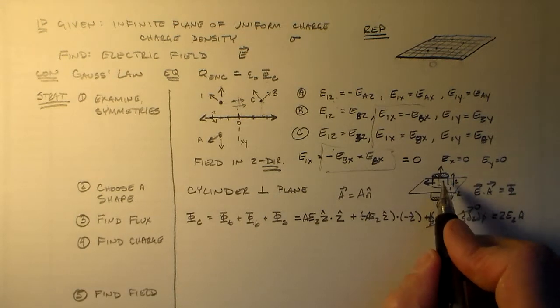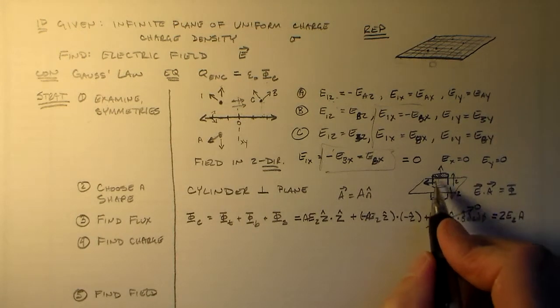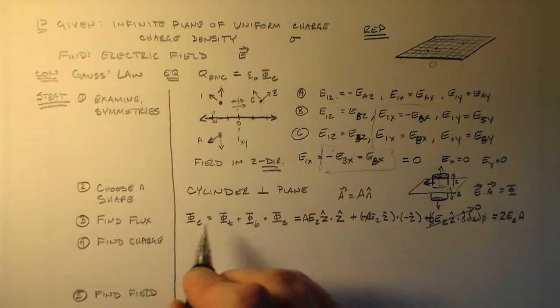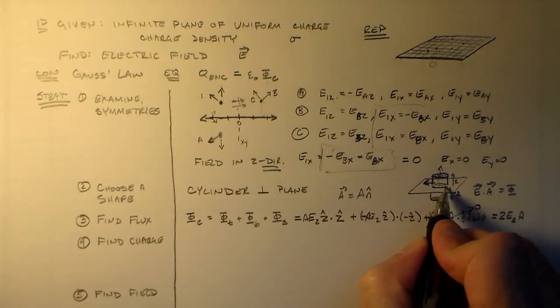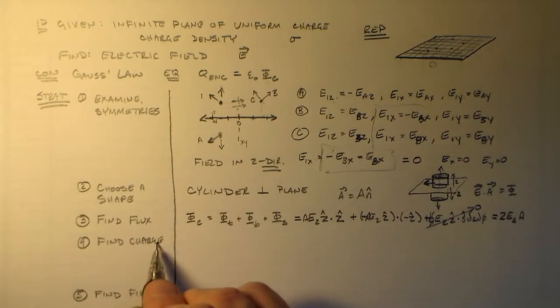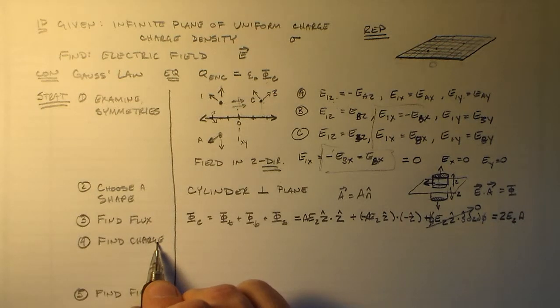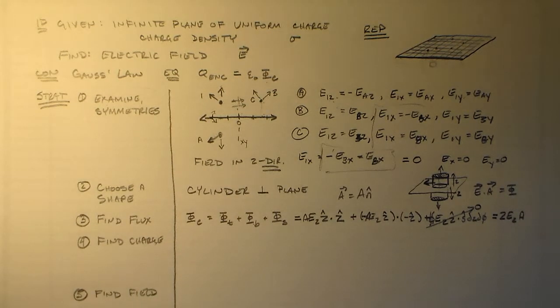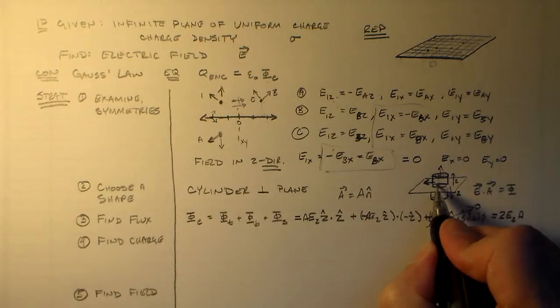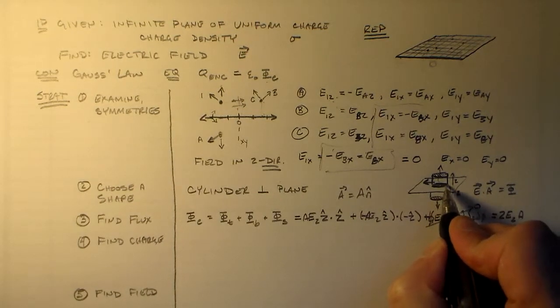Which means this total flux is two Ez times the area. So that's what's coming through here, plus what's coming through here, plus the zero that's coming through around there, which looks like a zero because it's a big circle. All right. So now we want to find the charge. Again, this isn't going to be really hard. We just care about what's in here.